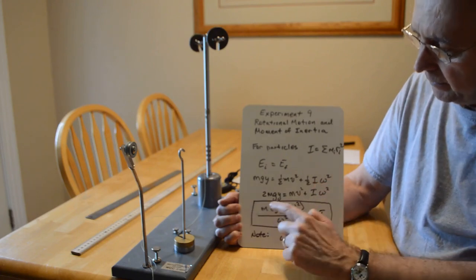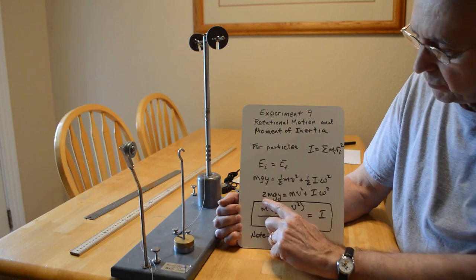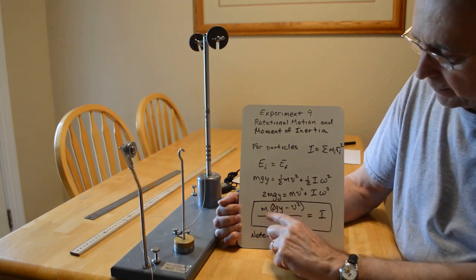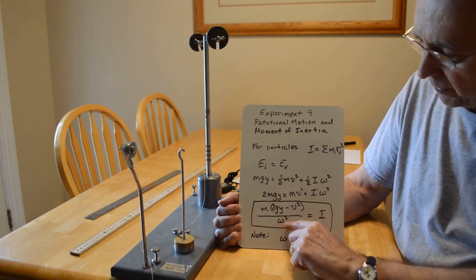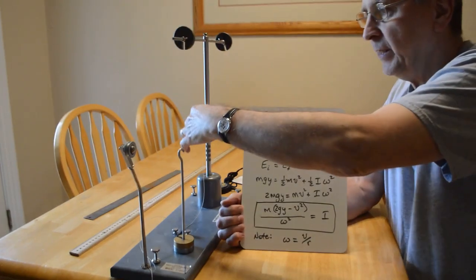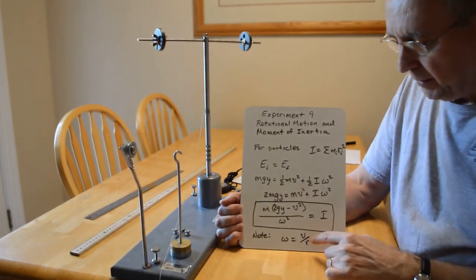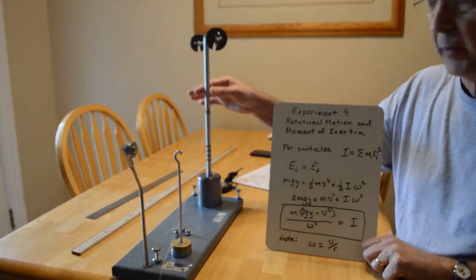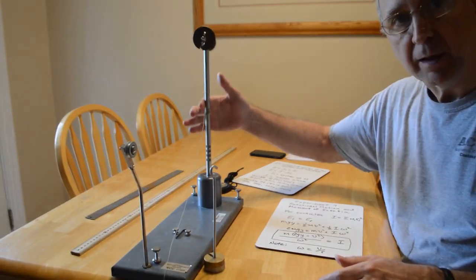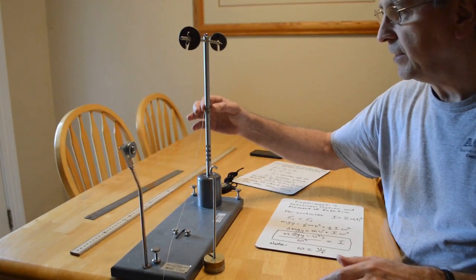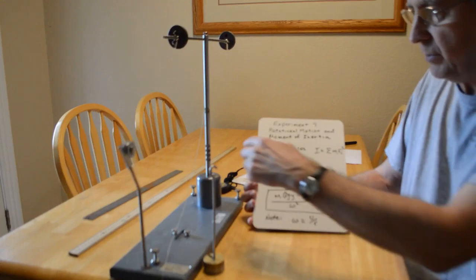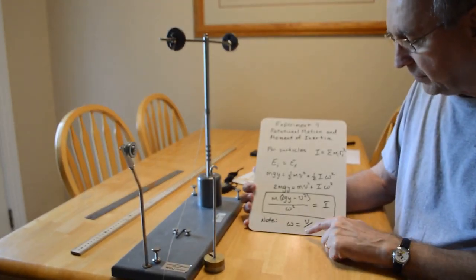We want to solve for I. Multiplying through by 2 to get rid of the one-half, we get 2mgy equals mv squared plus I omega squared. Solving for I gives: I equals little m times the quantity (2gy minus v squared) over omega squared. The angular velocity omega of the spinning object is related to the velocity of the falling object by v over little r, where little r is the radius of the shaft. The velocity of the falling weight equals the tangential velocity of the string coming off the central shaft, so v over the shaft radius gives us omega.